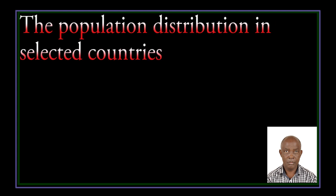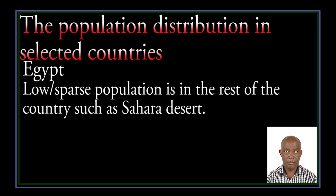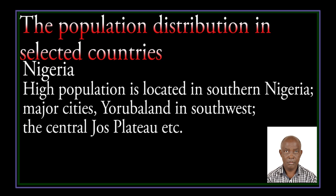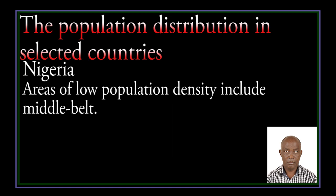Population distribution in selected countries. Egypt: high population is concentrated along the Nile Valley, along the Nile Delta, urban centers, along the Mediterranean coast, and some areas on the shores of the Red Sea. Low population in the rest of the country, such as the Sahara Desert. In Nigeria, high population is located in southern Nigeria, major cities, Yoruba land in the southwest, and the Central Jos Plateau. Moderate population is in the northern part, around Sokoto, Kano, and Kastina. Areas of low population include the Middle Belt.